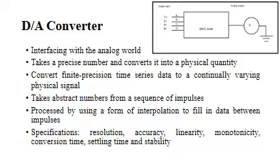The performance of a converter changes with drift in temperature, aging, or power supply variations. So all the parameters such as offset gain, linearity error, and monotonicity may change from the values specified in the data sheet. Temperature sensitivity defines the stability of a DA converter.